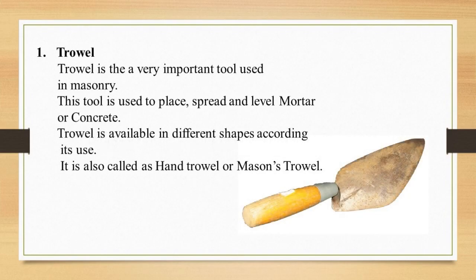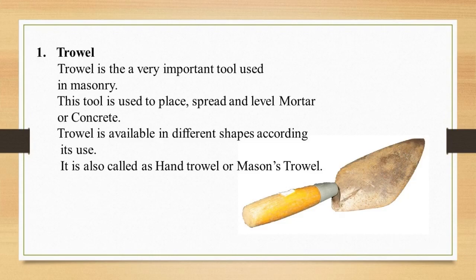The first tool is the trowel. A trowel is a very important and basic tool used in masonry. It is used to place, spread, and level mortars or concrete. Trowels are available in different shapes according to their use. It is also called a hand trowel or a mason's trowel. You will see its details and practical use in the video on the next slide.